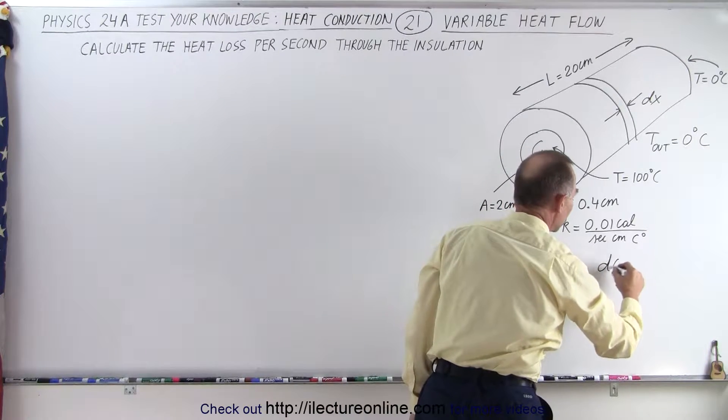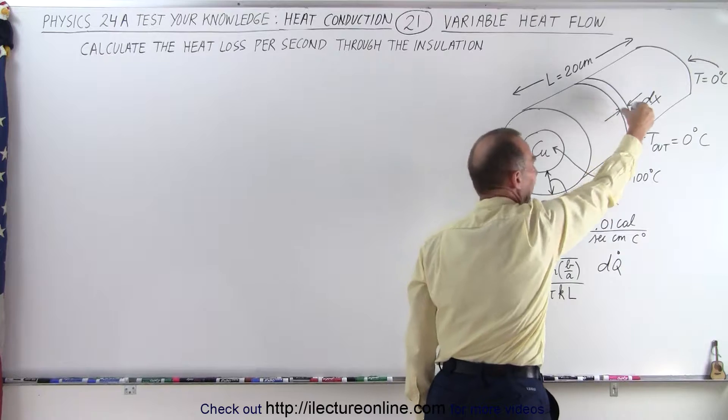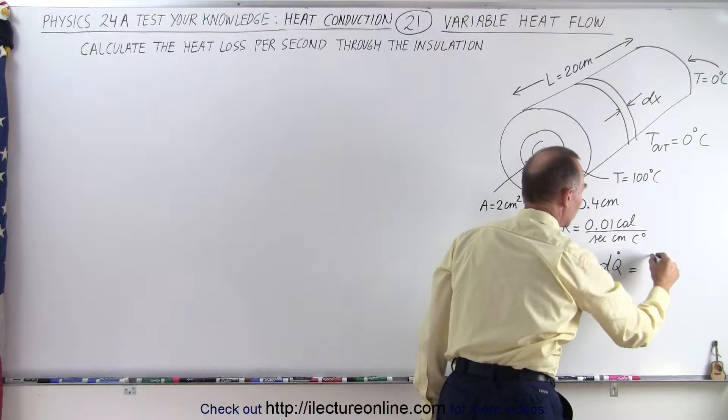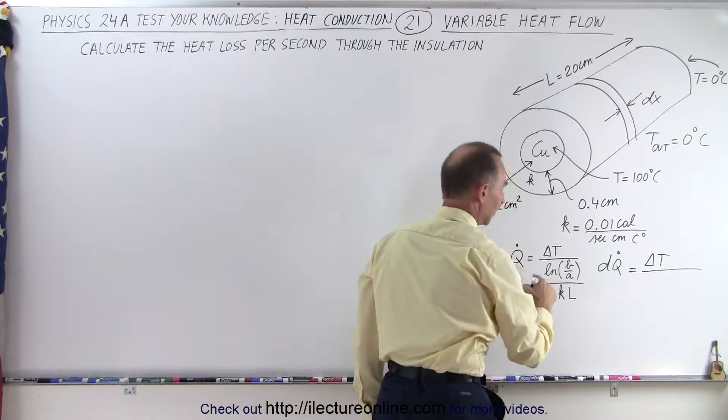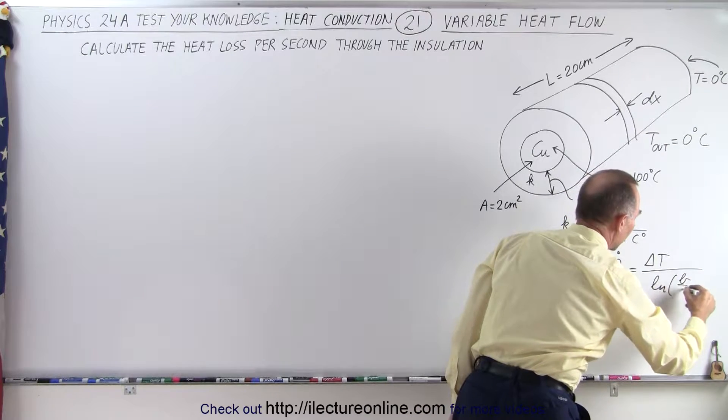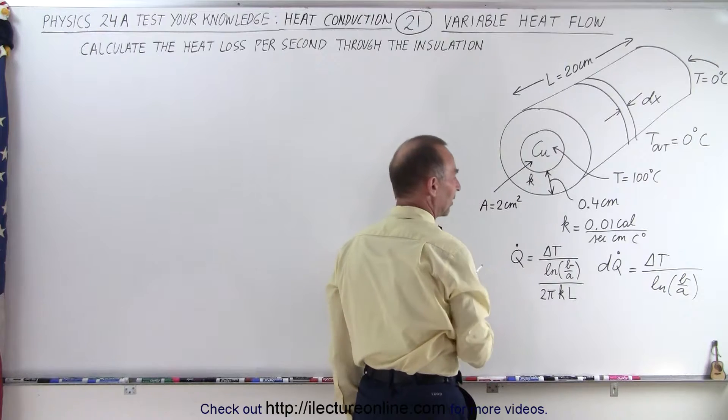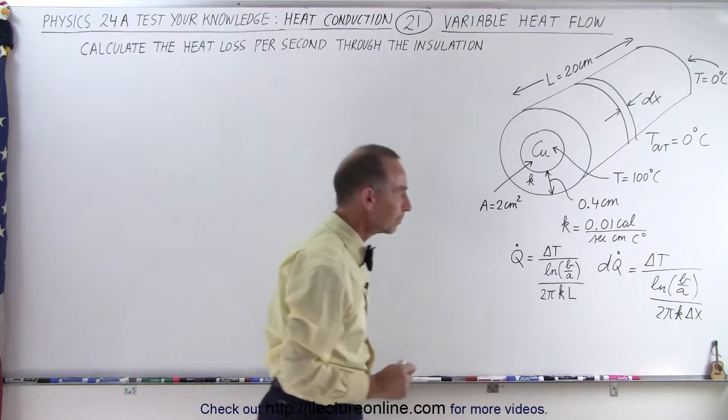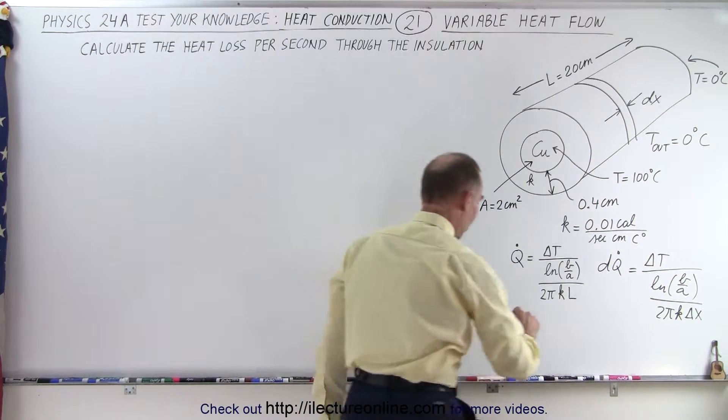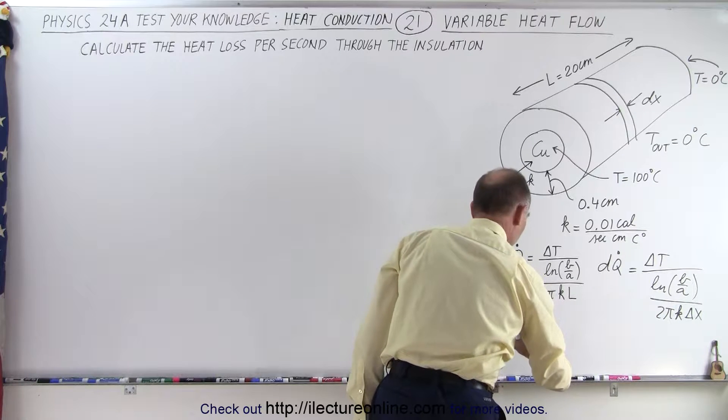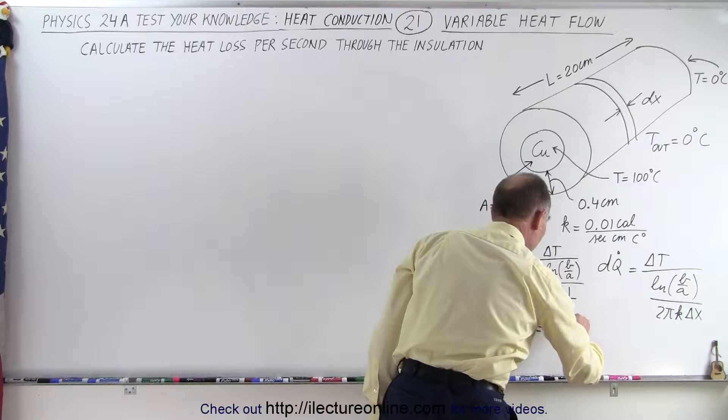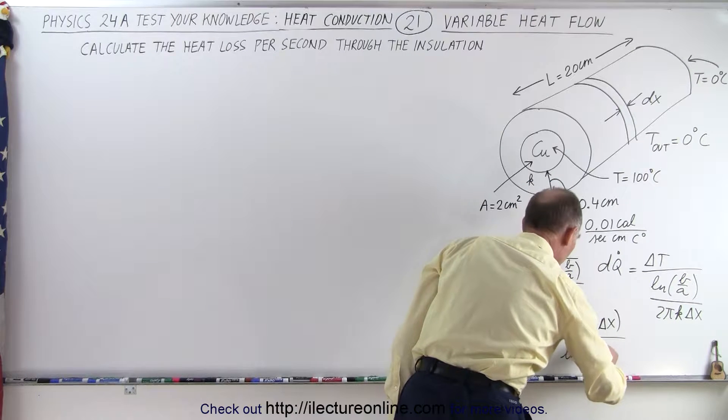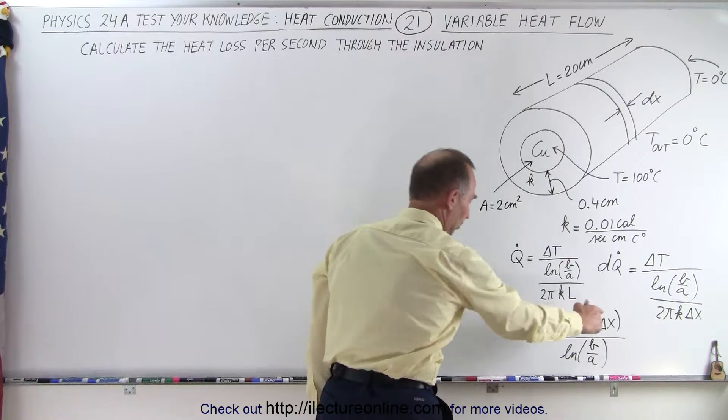So in other words, we can write that dQ̇, the small amount of heat going through that little section right there, instead of having a total length of that, we're going to replace this by a dx. So this will be equal to the ΔT divided by the natural log of the ratio of the outside to the inside radius of that layer, divided by 2πK times dx.